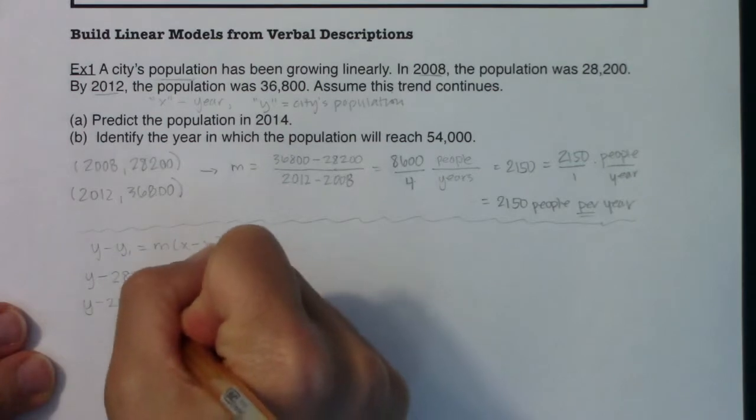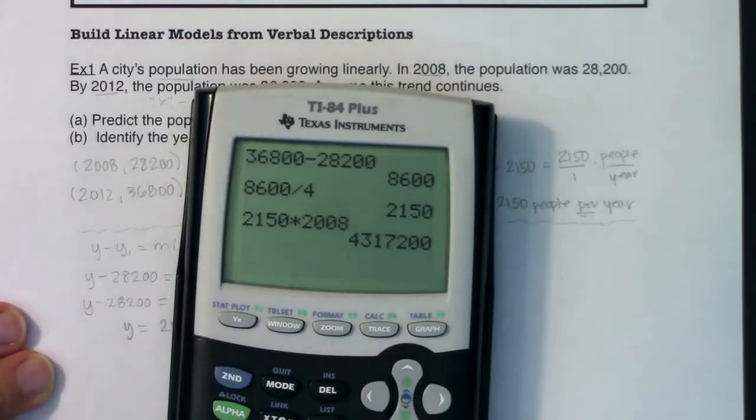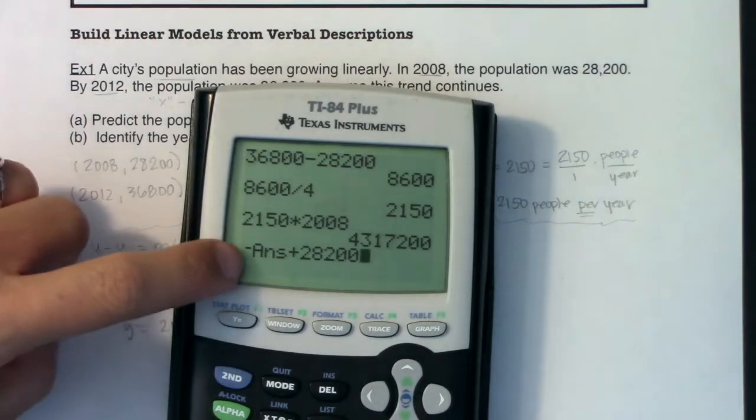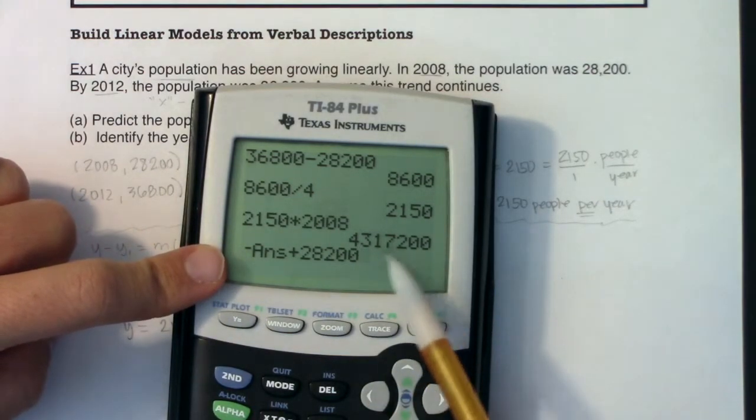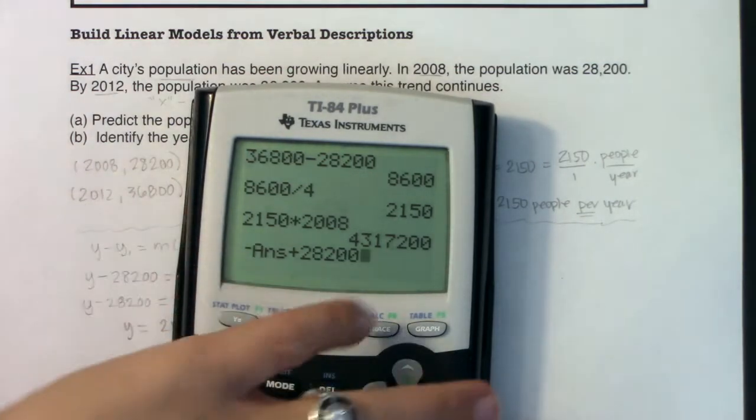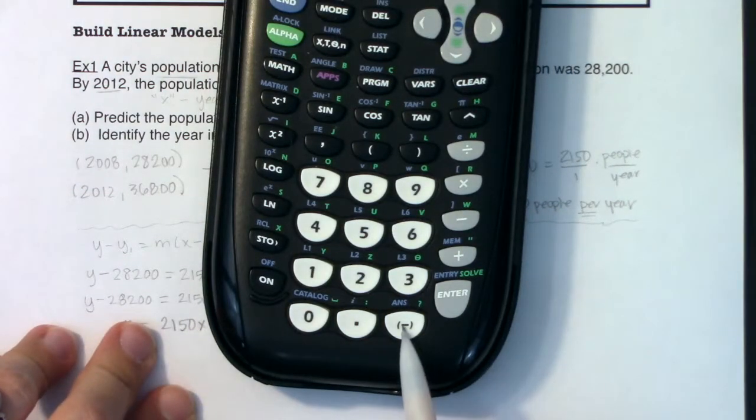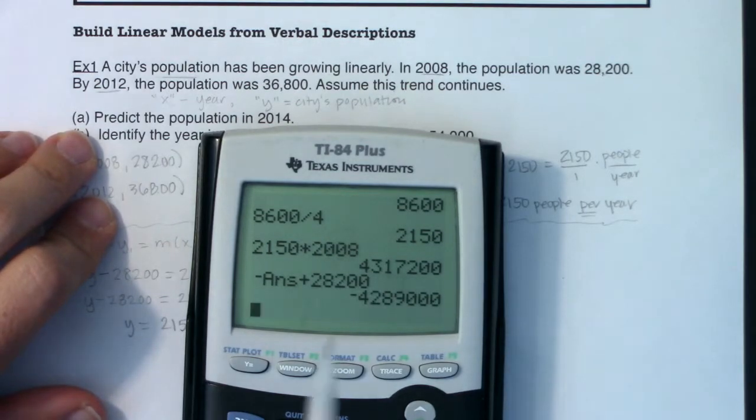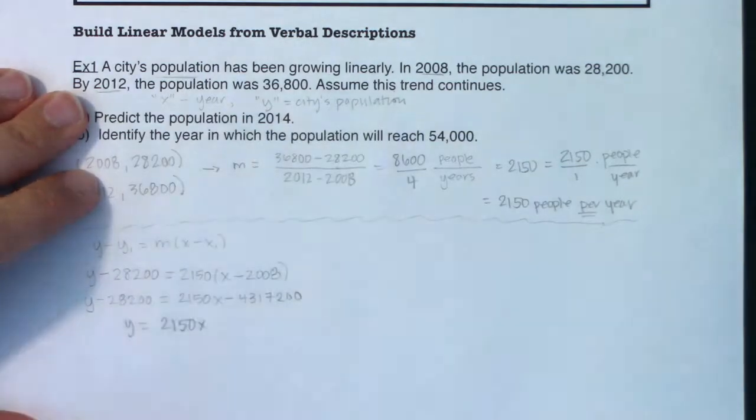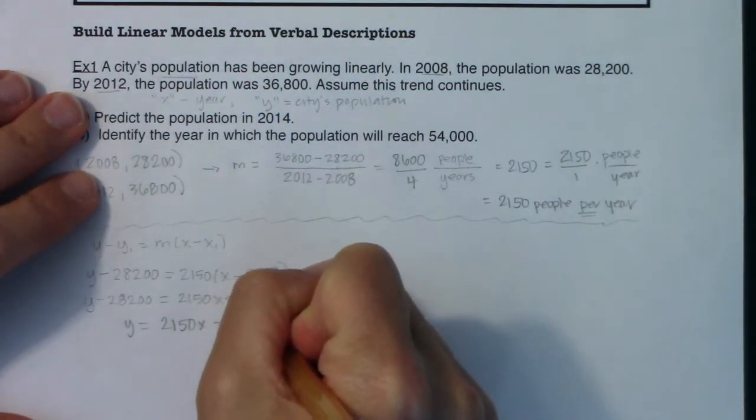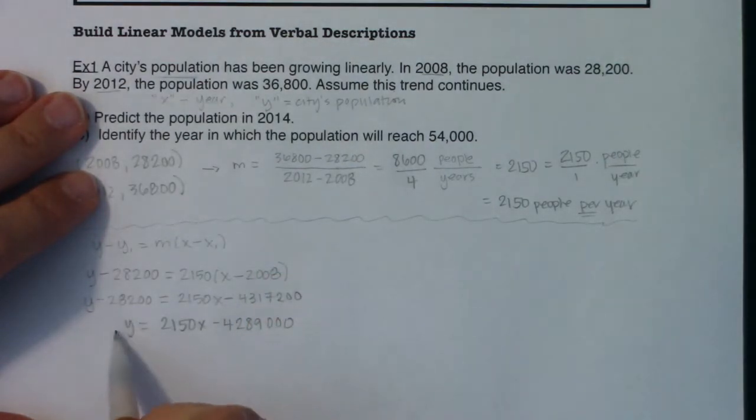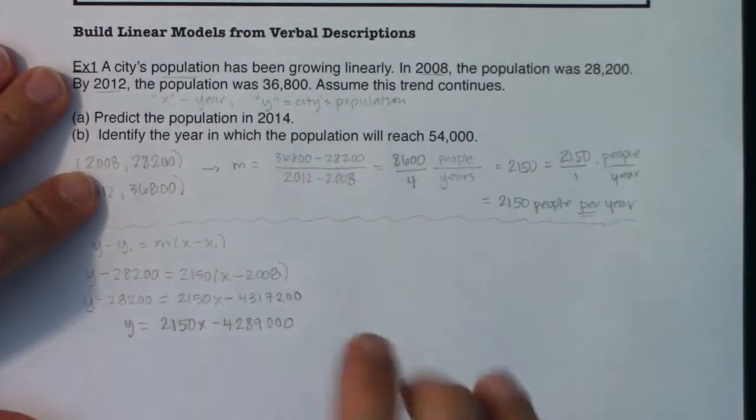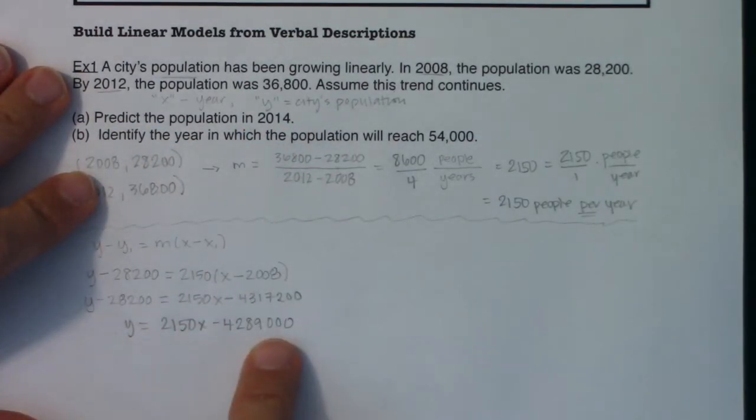And then I need to add this over. So ultimately I will have y is equal to 2,150x. And let me take the negative of this answer and add 28,200. And if you weren't sure how I got this answer to show up, the reason I used answer is because I'm lazy and I didn't want to retype that. So you might have seen me hit my second key. If you look over your negative symbol down here, you'll see the letters A and S. And that's how you can call up your previous answer. So I'm taking this answer and I'm going to add 28,200 to it. So I'm left with negative 4,289,000. So that is just my linear model. I haven't even gotten to parts A and B, but this is Mx plus B, right? I'm seeing my linear model.